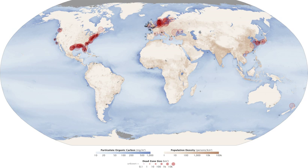Dead zones can be classified by type, identified by the length of their occurrence. Permanent dead zones are deep water occurrences that rarely exceed 2 mg per litre. Temporary dead zones are short-lived, lasting hours or days. Seasonal dead zones are annually occurring, typically in warm months. Diel cycling hypoxia is a specific seasonal dead zone that only becomes hypoxic during the night.